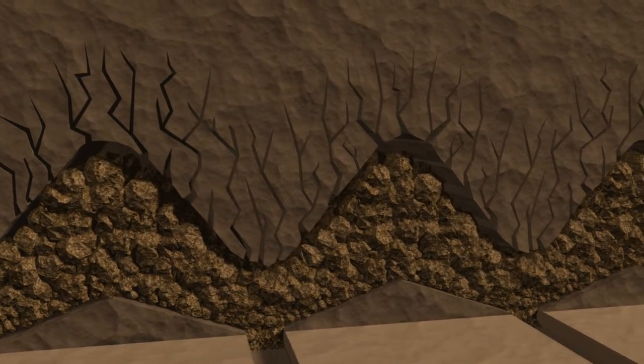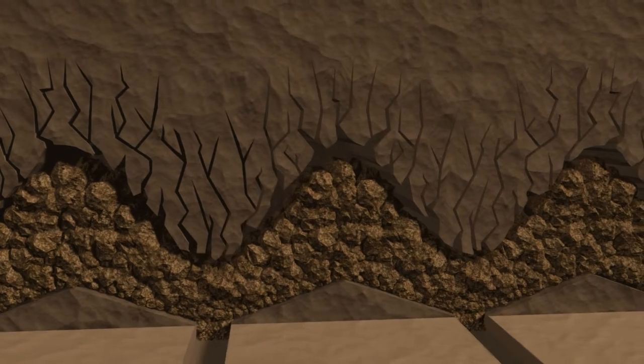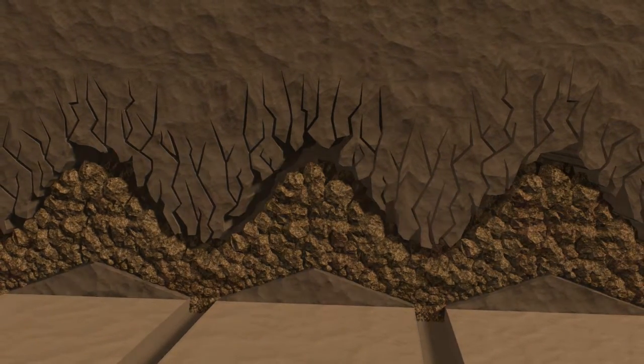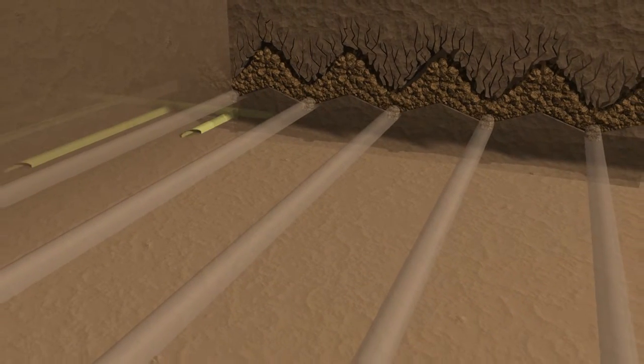Once a large enough area has collapsed and been removed, the cave will then continue to naturally propagate, or spread, upwards into the copper ore. Now the ore is ready to be removed.